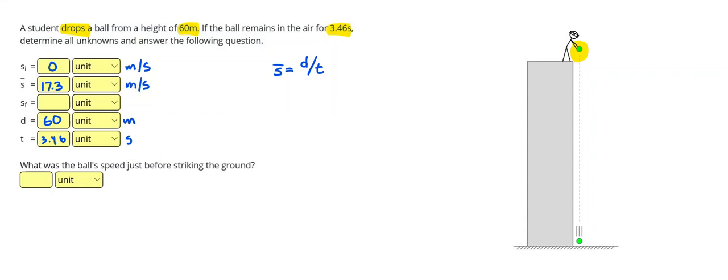Make sure you keep at least three significant figures. More is okay, but don't keep less. And then to get the final speed, I can use the equation that final speed equals two times the average speed minus the initial. Or in this case, just two times the average. So doubling that, I get 34.6 meters per second.